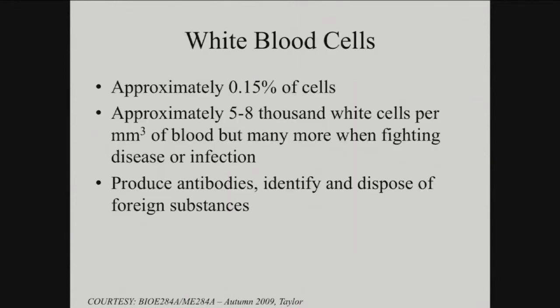And then of course there are white blood cells, which are a very small percentage of the cells in your blood — normally a couple of thousand per cubic millimeter — but that number jumps when you're fighting disease or infections. These are the ones that identify and dispose of foreign substances, get rid of diseases, and produce antibodies.